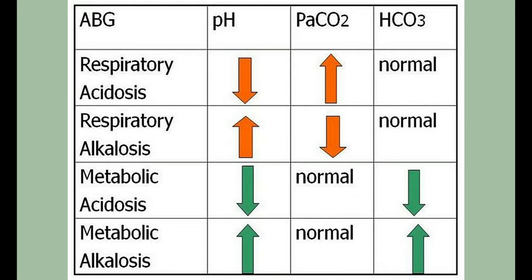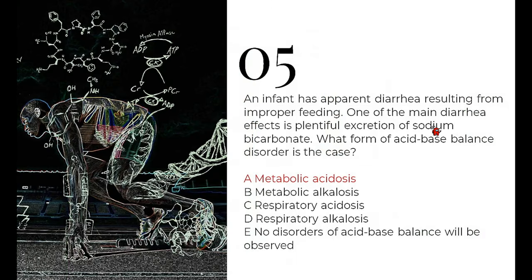Metabolic alkalosis shows increased pH and increased bicarbonate concentration, due to either increased bicarbonate retention or increased excretion of acidic substances — seen, for example, in vomiting. In this question, bicarbonate ions are being excreted in diarrhea, leading to increased acidic substances in the body — this is metabolic acidosis.